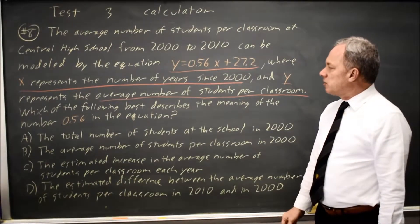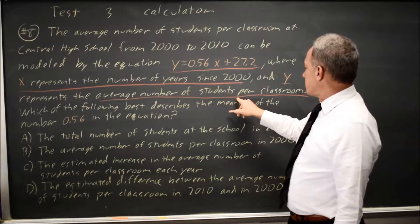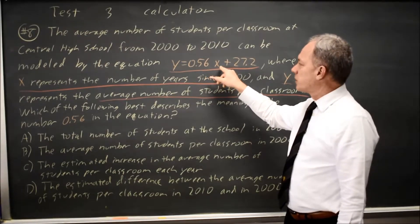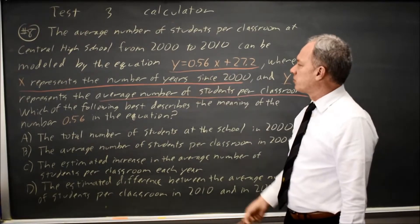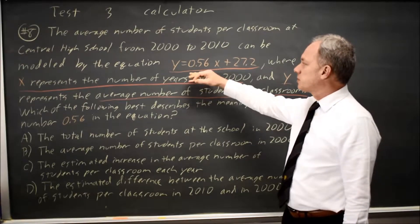In this case, the slope represents how much y, the average number of students per classroom, goes up for each increment of x by 1, where x is the number of years. So this is how much the average number of students per classroom goes up each year.